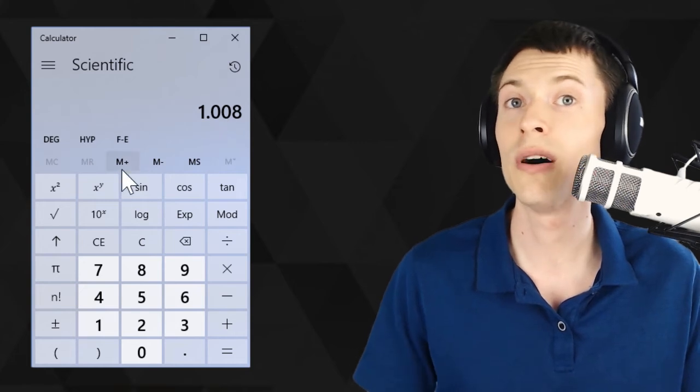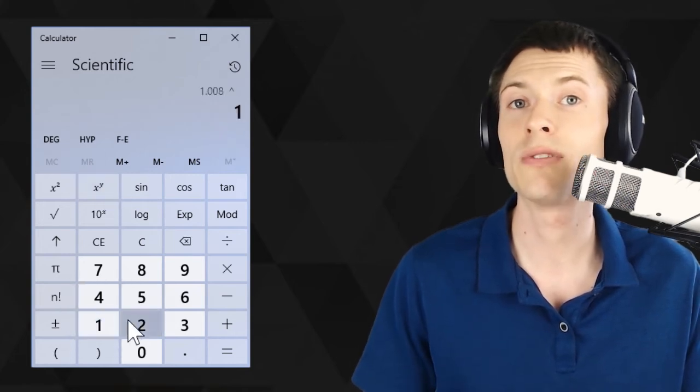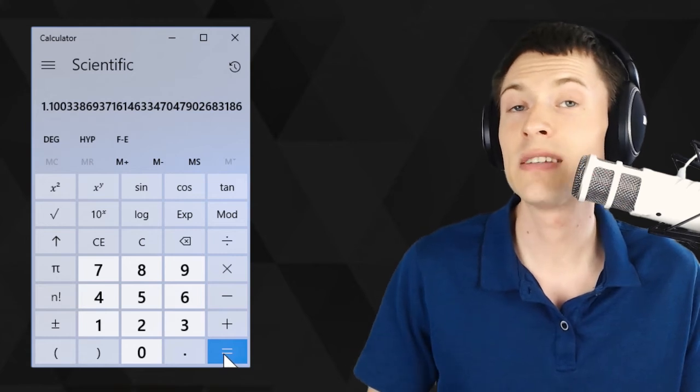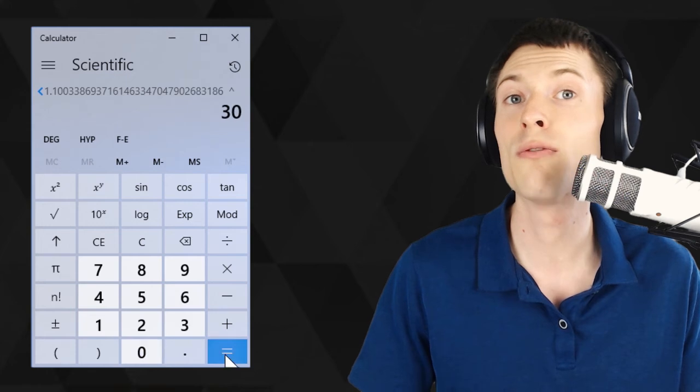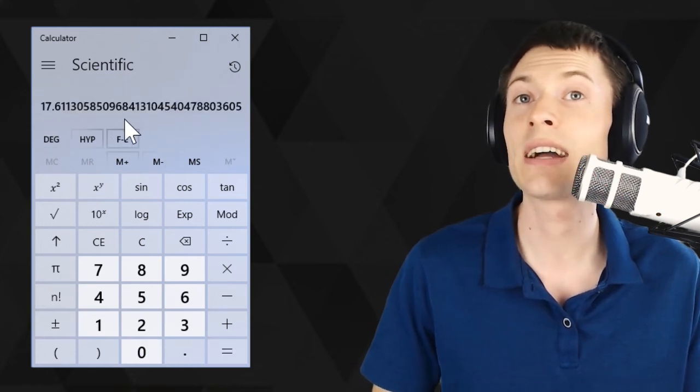So this is the growth over one month. Once again, multiply it by itself 12 times to get the growth over a year. So now we have what effect this is going to have on the money in one year. Let's raise it to itself 30 times to get the growth over 30 years. And now we're looking at a 17x growth.